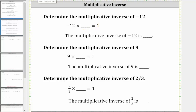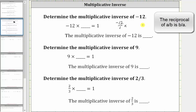If we write negative 12 as a fraction with the denominator of one, we would have negative 12 over positive one. Now if we multiply by the reciprocal, the product will be positive one. To find the reciprocal of a fraction, we interchange the numerator and denominator, or we could think of just flipping the fraction over.